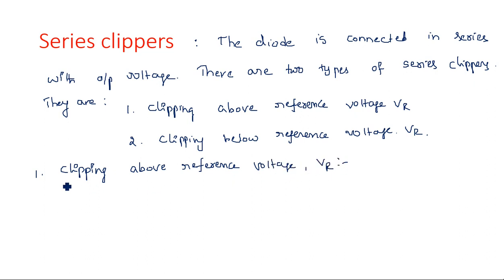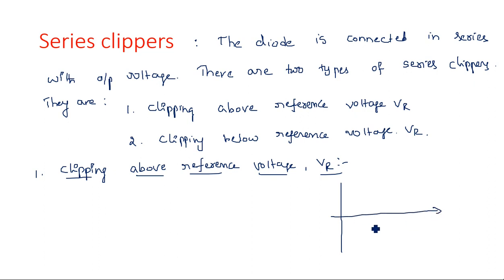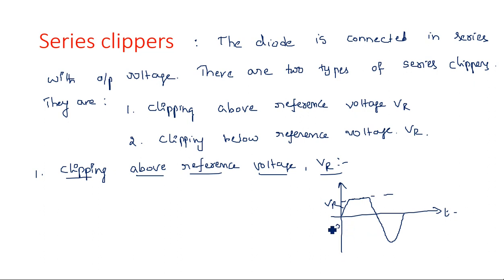For clipping above reference voltage VR, what would be the expected output waveform? If VR is the reference, then the signal below VR is present as it is, and the part above VR is eliminated. That is clipping above reference voltage.